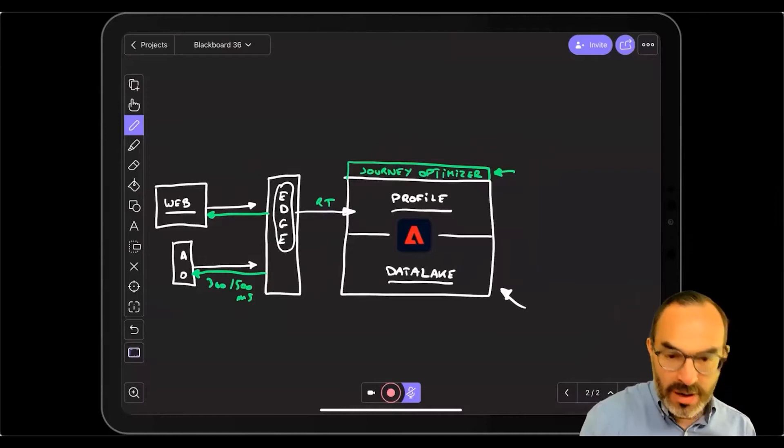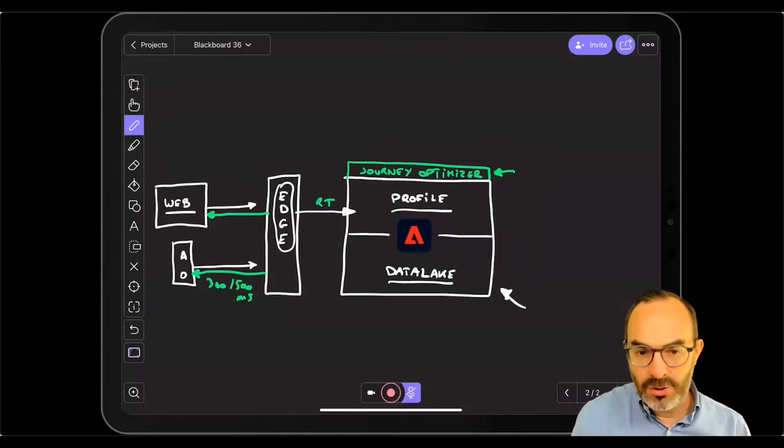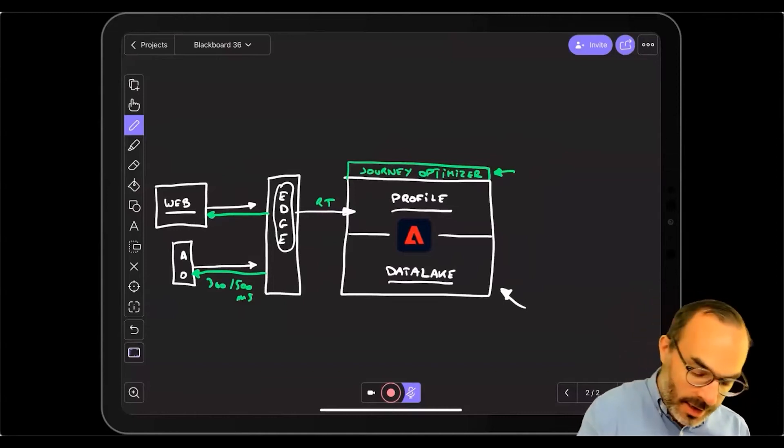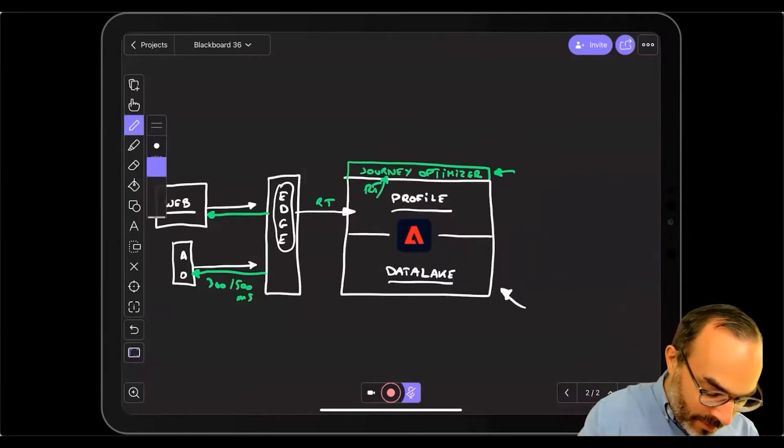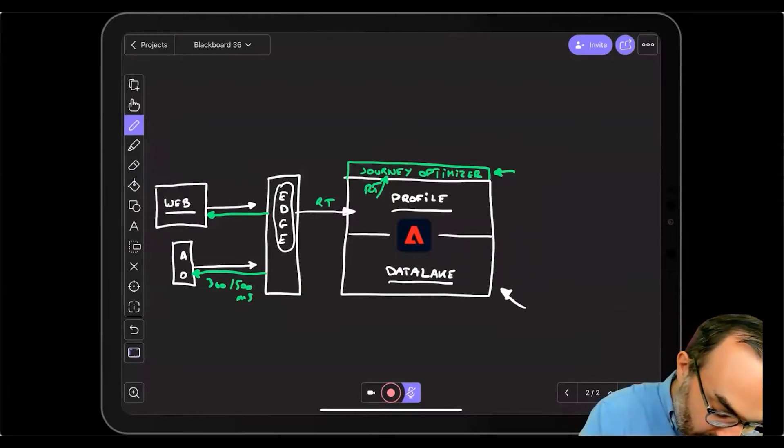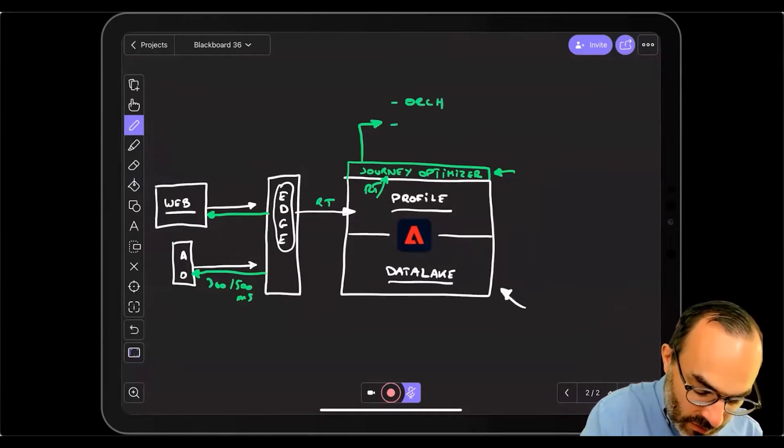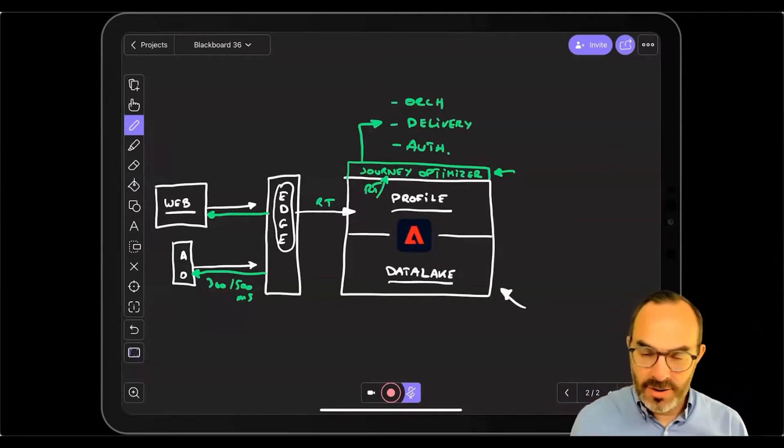Some people asked questions on the capability of Journey Optimizer. What can I do? How do you talk about it? Journey Optimizer is listening to what's happening in profile in real time. So all those journeys that you've seen have kicked off in real time in the case of the trigger based journeys. In Journey Optimizer, you can detect three capabilities. One is called orchestration. The next one is delivery. And the third one is authoring. So you can create messages, you can deliver messages and you can orchestrate the delivery of those messages. And those three components are part of the Journey Optimizer product.